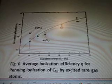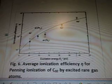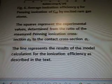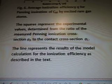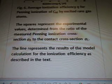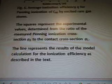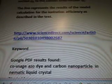And here's another little guy here. I'm going to make him a little bigger. So, this is showing some sort of curve with these guys. Ionization efficiency, and then it shows excitation energy. So, it curves to the right. Average ionization efficiency for pending ionization for C60 by excited rare gas atoms. Squares represent the experimental values determined from the ratio of the measured pending ionization cross-section to the contact cross-section. The line represents the results of the model calculation for the ionization efficiency as described in the text. That's from www.sciencedirect.com.